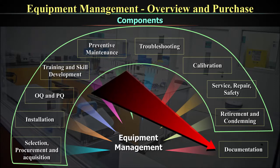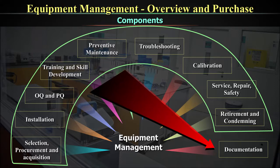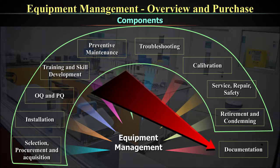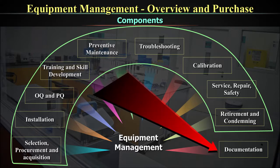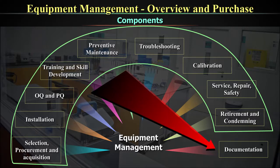Documentation covers everything: starting from selection, installation, performance qualification, operational qualification, preventive maintenance, troubleshooting, calibration and services and repair, and retirement and condemnation. Everything should be documented, and these documents should tell the story of your equipment in your lab. We are talking about a very comprehensive equipment management program, discussed across multiple videos under this caption.